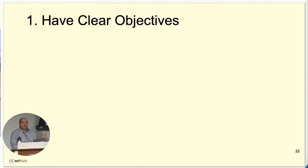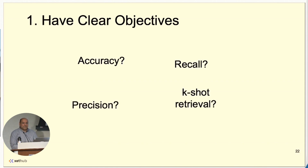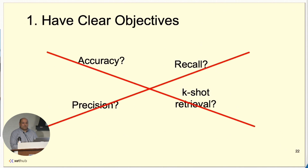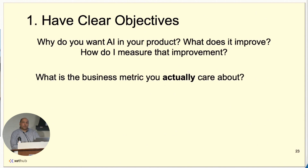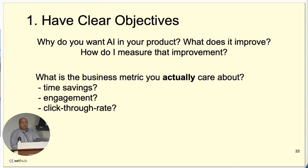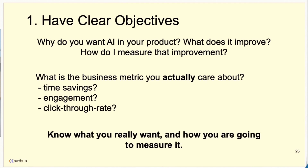The first principle is to have clear objectives. What do I mean by objectives? Accuracy, precision, recall, K-shot retrieval, model metrics? No — those are useful when training or evaluating a model, but they're not the right objective for an AI application. Instead, you have to think about what's the point of your application. What are you actually trying to accomplish? Is it time savings, engagement, click-through rate, conversion? You have to know what you actually want and how you're going to measure it. That's the objective by which you evaluate your AI application.